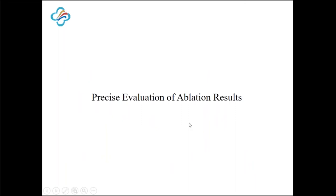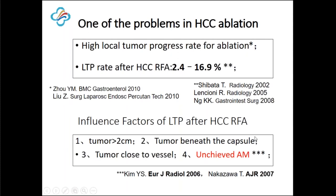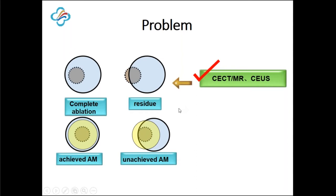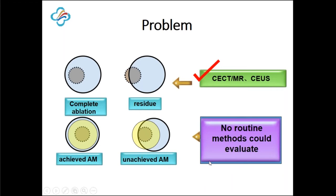The fourth part is precise evaluation of ablation results. One of the problems in HCC ablation is the higher local tumor progression rate compared with resection. Unachieved ablative margin is one of the influencing factors. For routine CT, MRI, or CEUS, they can make accurate diagnosis between complete ablation and residue. However, regarding the ablative margin, no routine method can evaluate it, because after ablation the tumor has disappeared and cannot be seen by routine measures including CT, MRI, or CEUS.